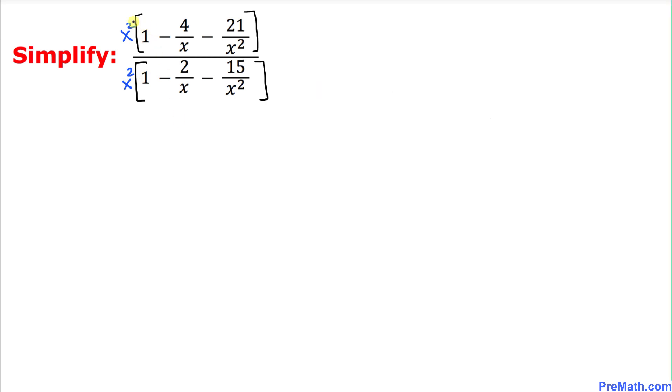Now let's go ahead and distribute this x square with each and every term in this bracket. That is going to give us x square and when we multiply this with this one that is going to give us negative 4x minus 21 on the top.